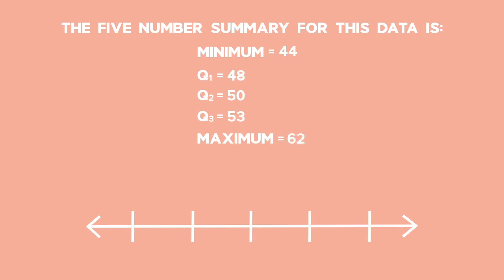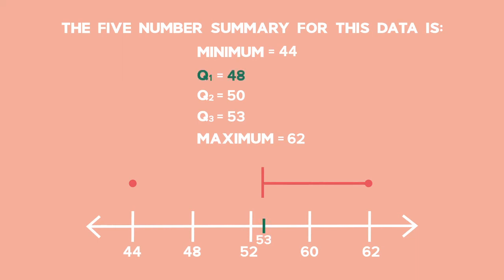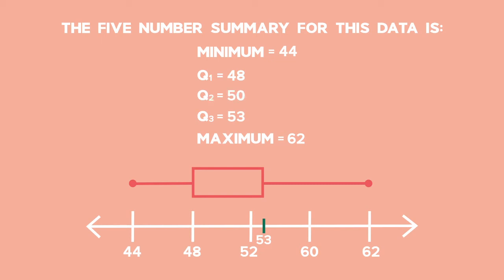Let's do this in fours: 44, 48, 52, 60, and then our maximum value 62. Our Q3 value is 53, our Q1 value is 48, so that means we just need to plot our Q2 value, which is 50, which would be roughly over here. And let's label that on the number line as 50.